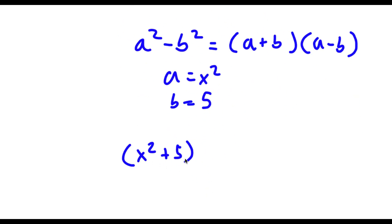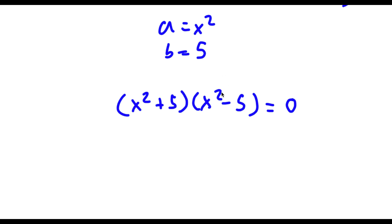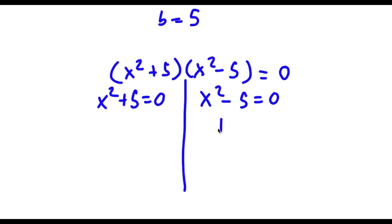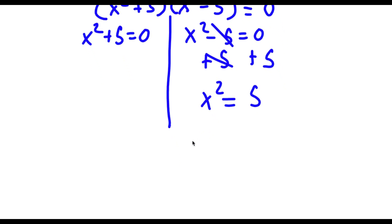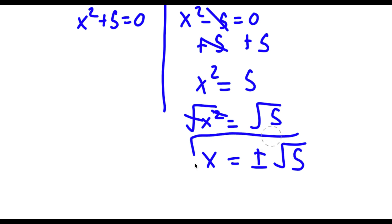So I have (x squared plus 5) times (x squared minus 5) is equal to 0. This gives me two equations: x squared plus 5 equals 0, and x squared minus 5 equals 0. Let's first start with x squared minus 5 equals 0. Adding 5 on both sides, these two cancel out and I'm left with x squared equals 5. Taking the square root on both sides, the square root of x squared is x, and x equals positive or negative square root of 5. So these are two solutions of x.